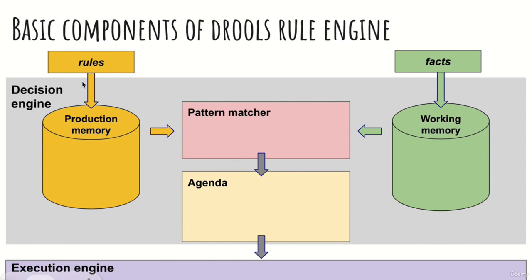On this slide we have the building blocks of the rules internal decision engine. We have a place in memory where rules are stored — this is called production memory. We have a place in memory where facts are stored — this is working memory. In between we have pattern matching, which is the core engine that takes the rules and finds matches from working memory. Once the rules that can fire together with the matched facts are found, they are moved to the agenda, and the agenda decides which one executes next in the execution engine.